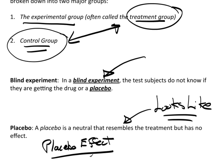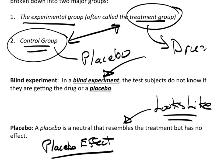The placebo effect works like this: suppose we're all in a study, we all have terminal cancer, and part of the people are getting the placebo while part are getting the real drug. If you have terminal cancer and it's your last hope, you may naturally start feeling better — that is the placebo effect. You could be getting the placebo and suddenly you're feeling good and reporting yourself as better. In a blind experiment, since neither group knows which they're receiving, the placebo effect should be equal across the board, helping to cancel it out.